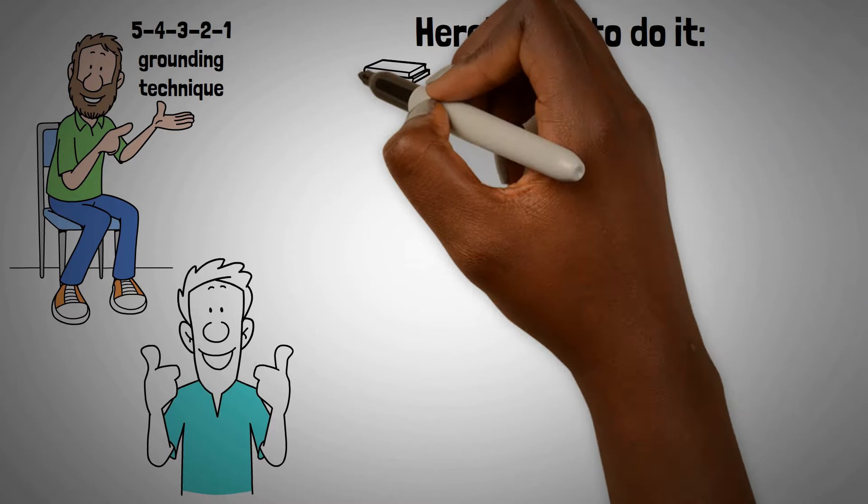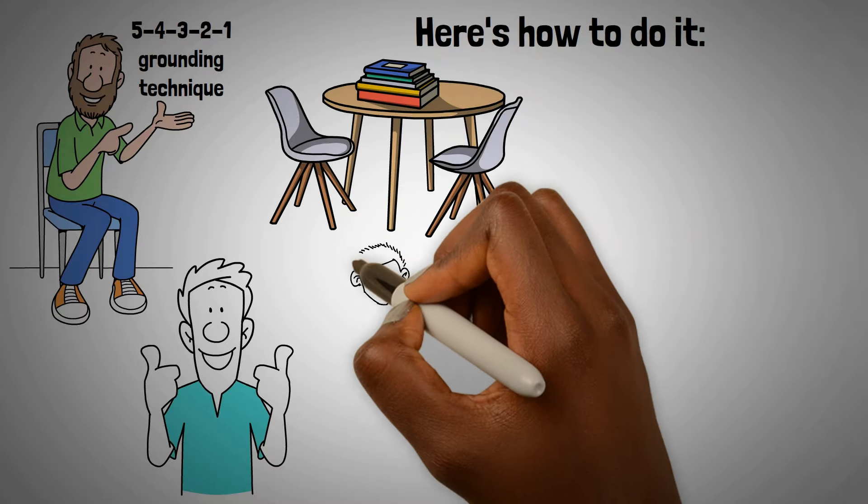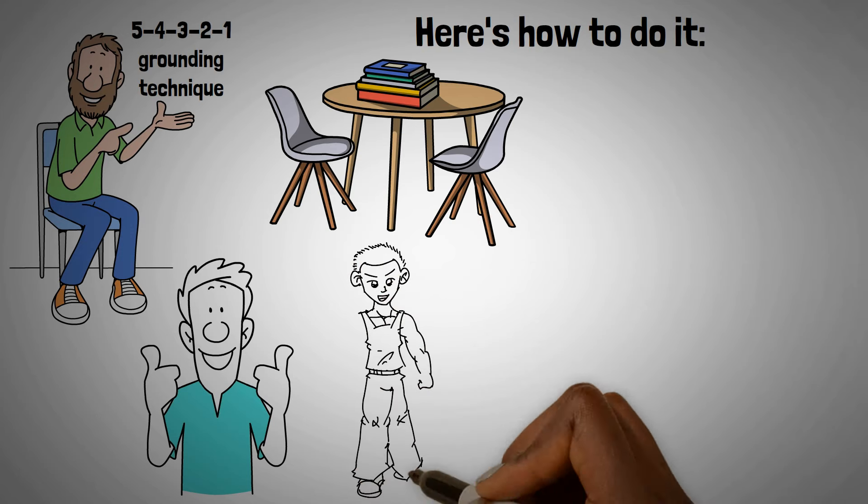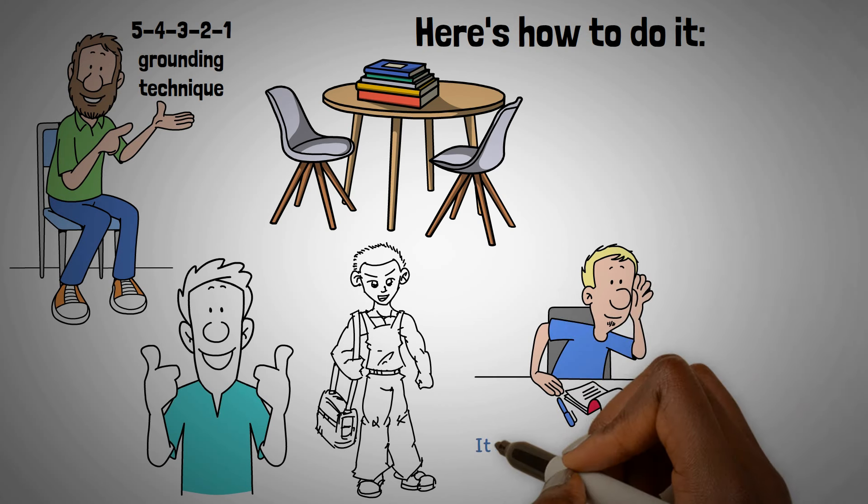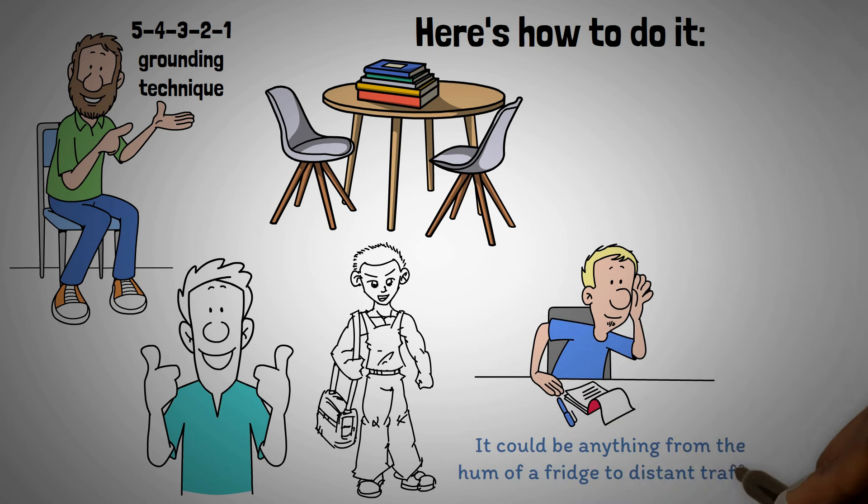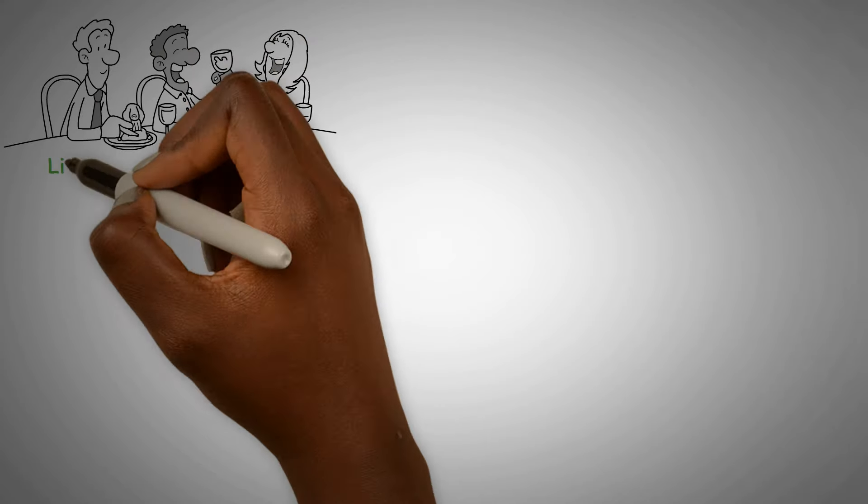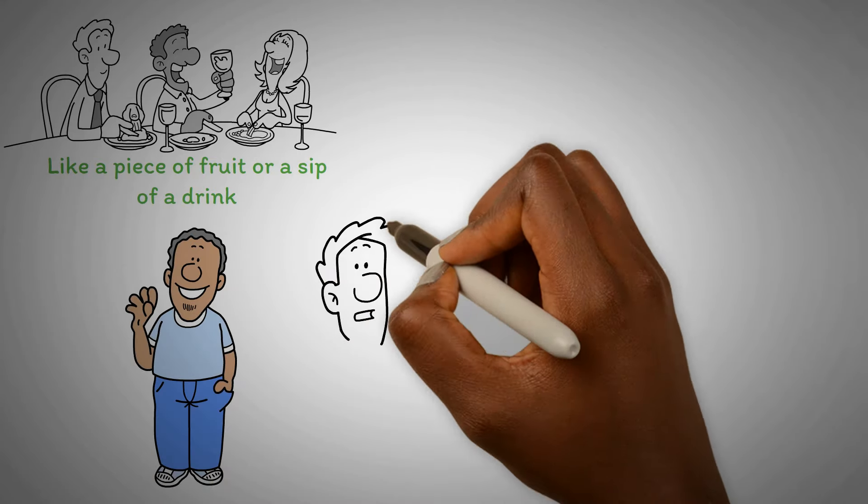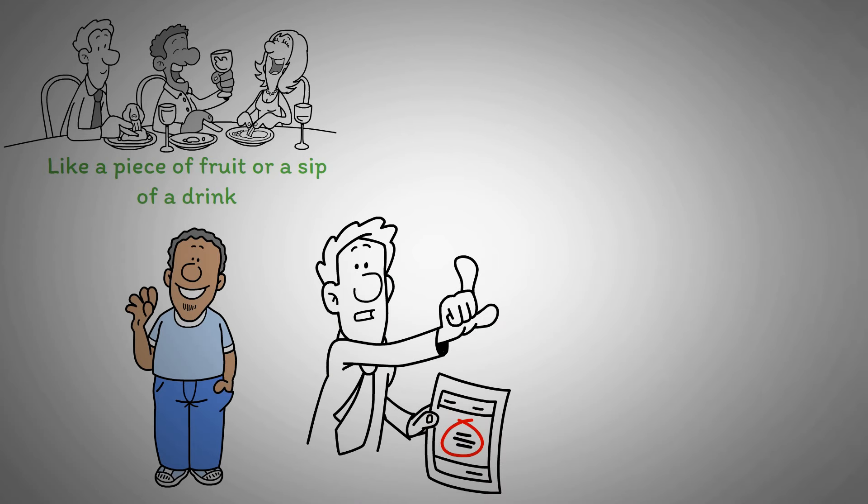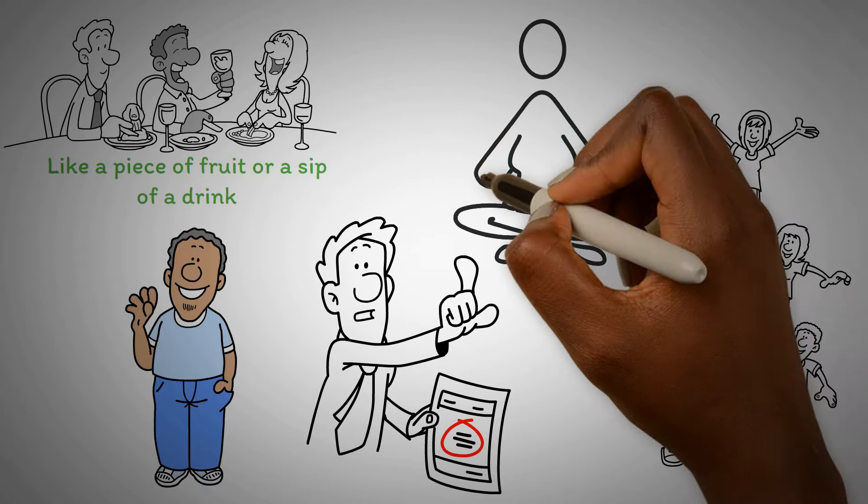Here's how to do it. 1. Identify 5 things you can see around you, like a book, chair, or plant. 2. Acknowledge 4 things you can physically feel, such as your feet on the floor or the air on your skin. 3. Listen and name 3 sounds you hear in the environment. It could be anything from the hum of a fridge to distant traffic. 4. Recognize 2 things you can smell, maybe the aroma of your lunch or a scented candle. 5. Finally, focus on one thing you can taste, like a piece of fruit or a sip of a drink. This technique helps you reconnect with the present moment, drawing your attention away from overwhelming thoughts and back to your immediate surroundings. By engaging your senses, you can find a sense of calm and bring your focus back to the here and now.